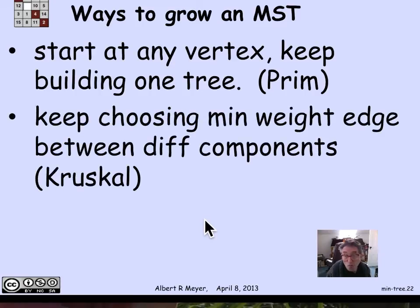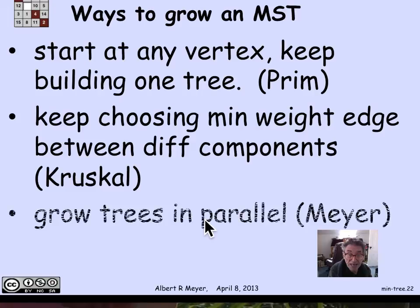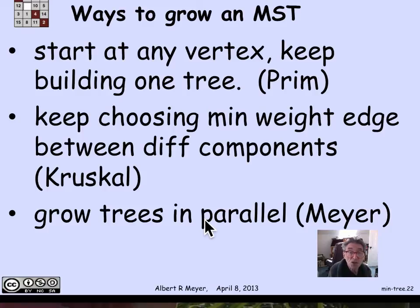Another approach is Kruskal's algorithm: globally, among all connected components, find the minimum weight edge overall, then color one of its endpoint components black and the other white to conform to the gray edge procedure. Finally, you can grow trees in parallel — choosing the minimum weight edge around each connected component simultaneously, growing components in parallel as long as their edge choices don't conflict. I call that jokingly Myers' procedure. These are the main applications of this coloring approach to finding minimum weight spanning trees.